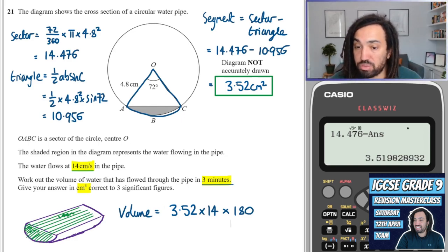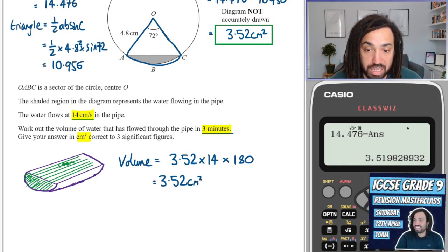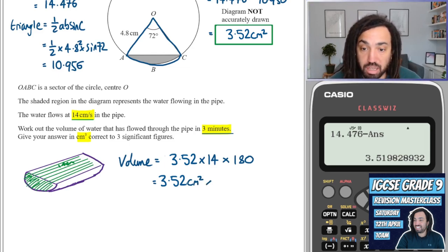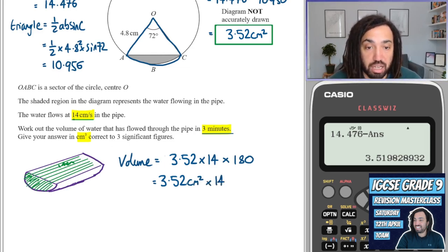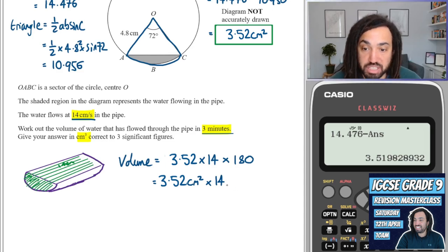Now there's another way that we could confirm that this is going to work, and that is by looking at the units. And that was centimetres squared, because that was area, times by 14, which is the flow, which is centimetres per second, so centimetres over seconds, like that, times by 180, which is seconds.